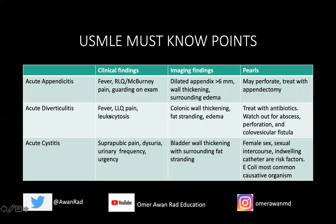Acute diverticulitis: fever, left lower quadrant abdominal pain, leukocytosis. You're looking for colonic wall thickening and fat stranding around those diverticula, typically along the sigmoid colon. This is typically treated with antibiotics, but there are a lot of complications associated with acute diverticulitis — such as a colonic abscess, perforation where you get free air in the abdomen or pelvis, and then that colovesicular fistula — the connection between the colon and the bladder that can result in air in the bladder and pneumaturia.